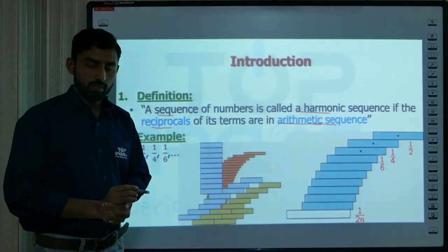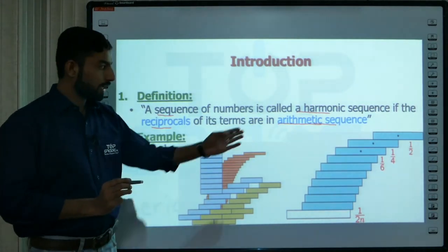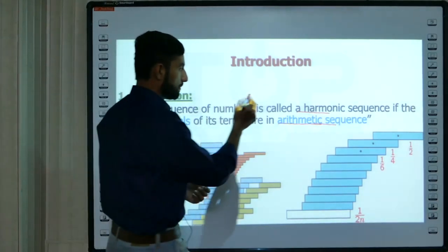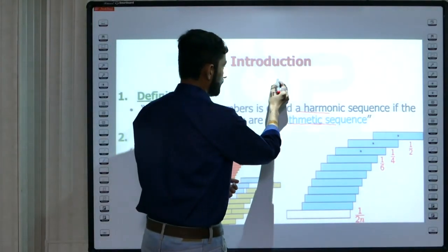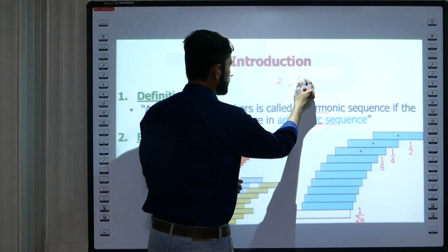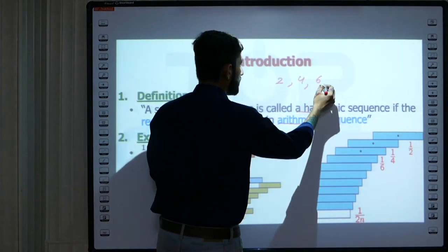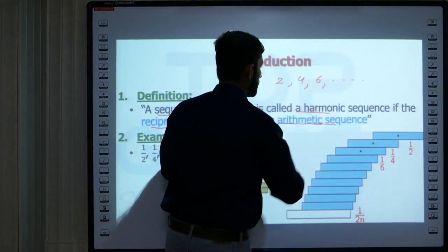Harmonic progression. What is arithmetic sequence? We saw that an arithmetic sequence is such a sequence whose consecutive terms have the same common difference, like these terms: 2, 4, 6.